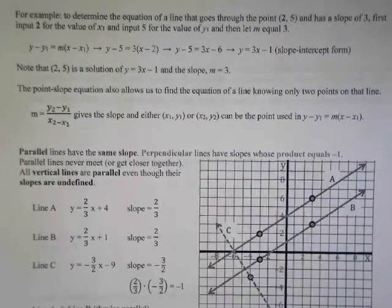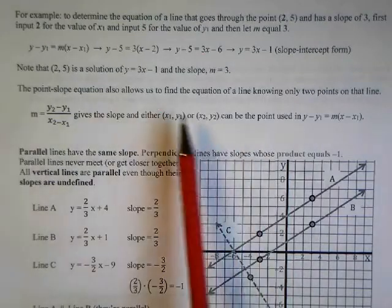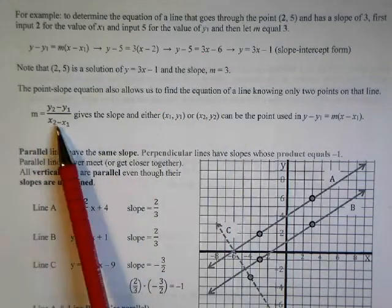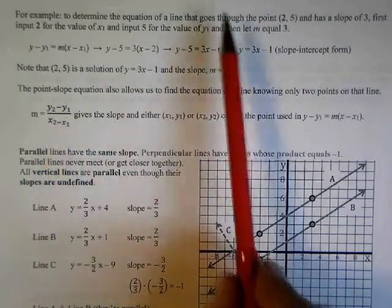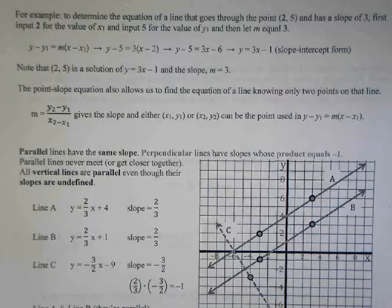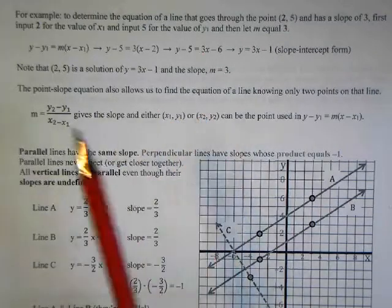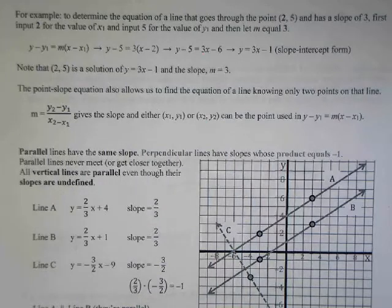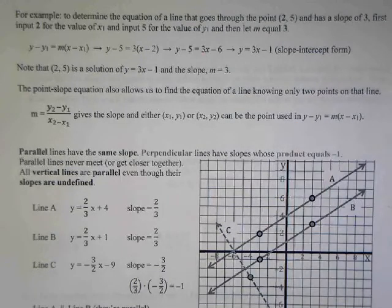The point-slope equation allows us to find the equation of a line knowing only two points. If we have just two points, we can use our slope equation to find the slope. And now that I have the slope, I can use either one of those two points and that slope in the point-slope form to find out the equation of a line.